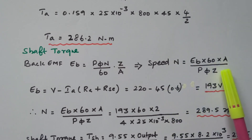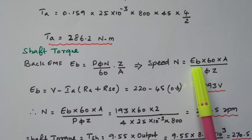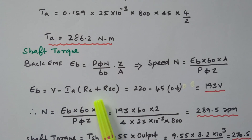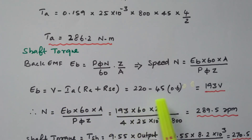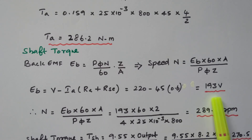Here the number of parallel paths, number of conductors, flux, and pole — all data are available — but the back EMF is not given in the problem, so we need to find it. Back EMF: E_B equals V minus IA into (RA plus RSE). The applied voltage is 220 minus 45 into 0.6, giving E_B equal to 193 volts. The back EMF developed in the motor is 193 volts.